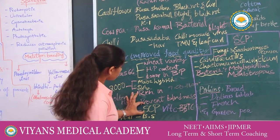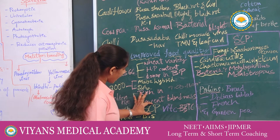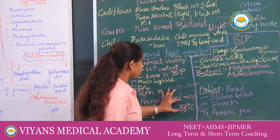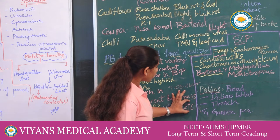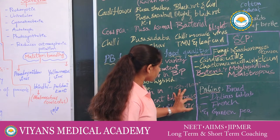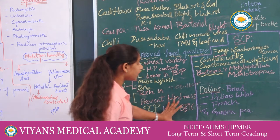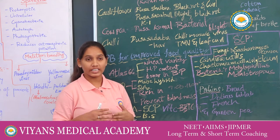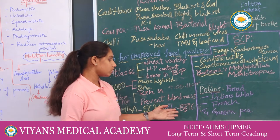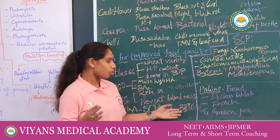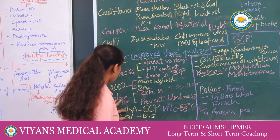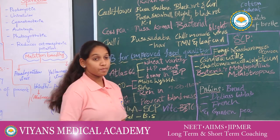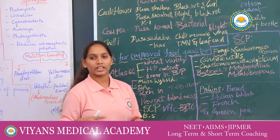Vitamin A sources include spinach, carrot, and pumpkin. Vitamin B and Vitamin C sources include bitter gourd, bathua, tomato, and cucumber. Bathua is known as the king of leafy green vegetables; its scientific name is Chenopodium. Iron and calcium are found in bathua and spinach.